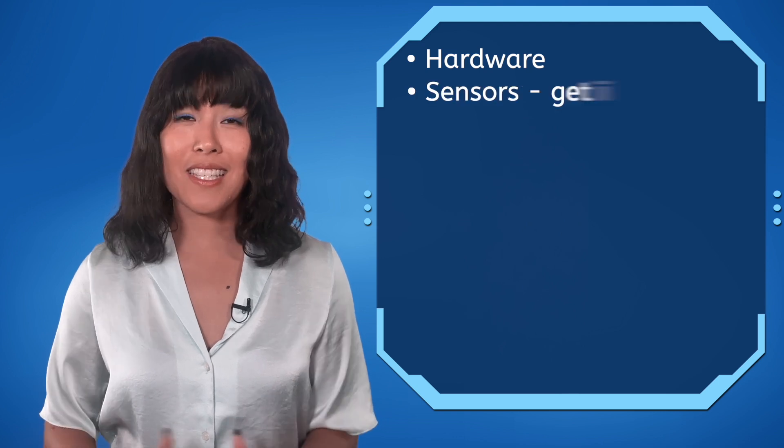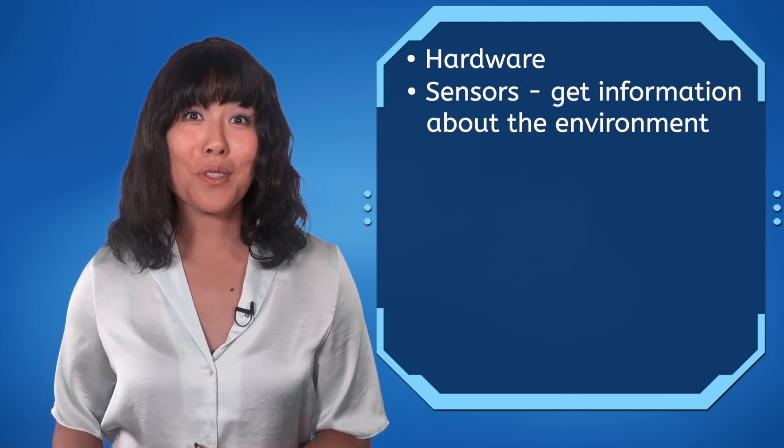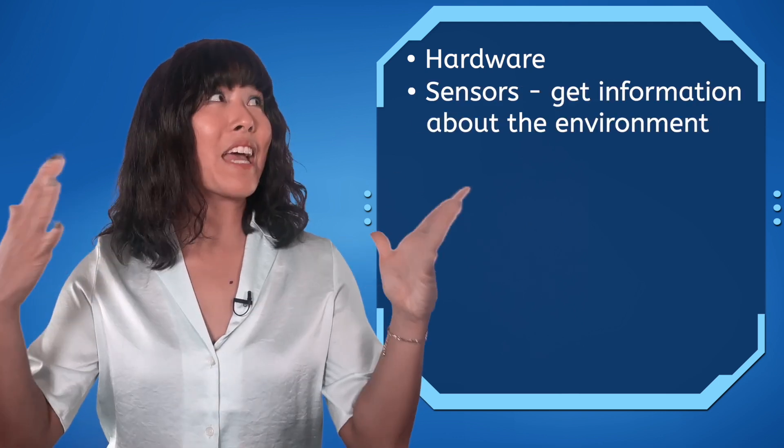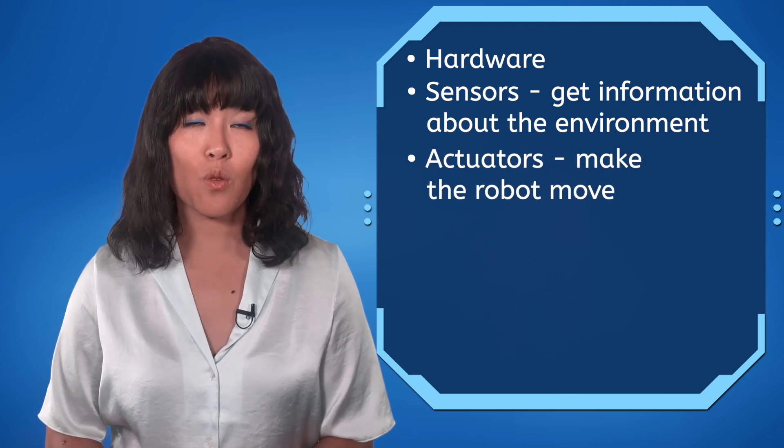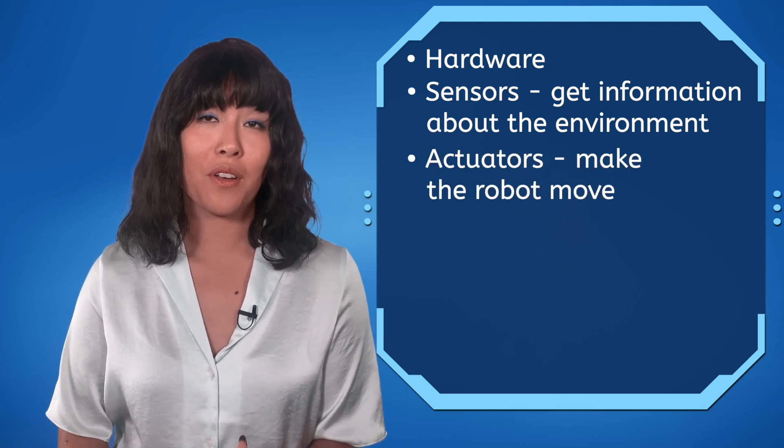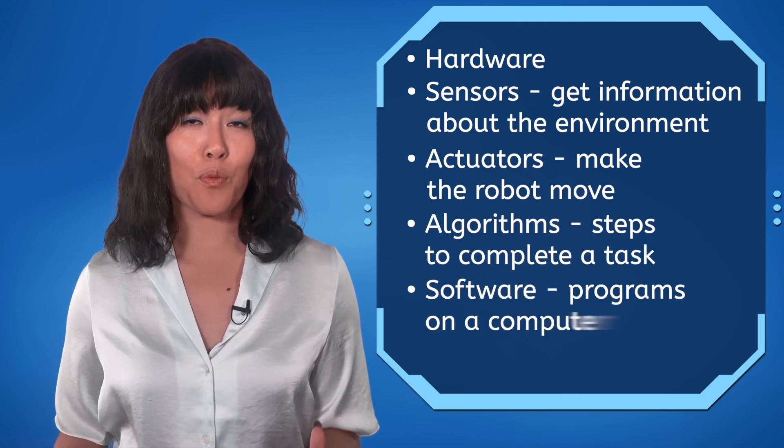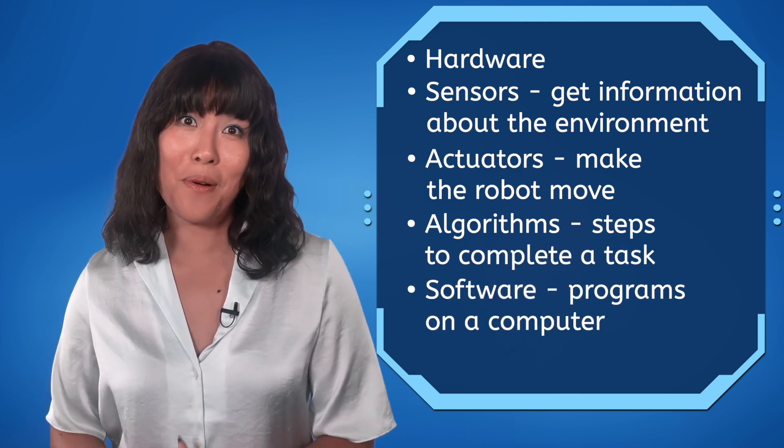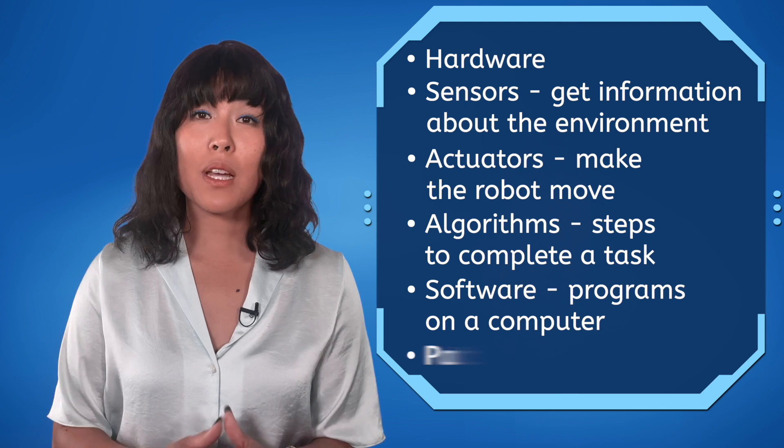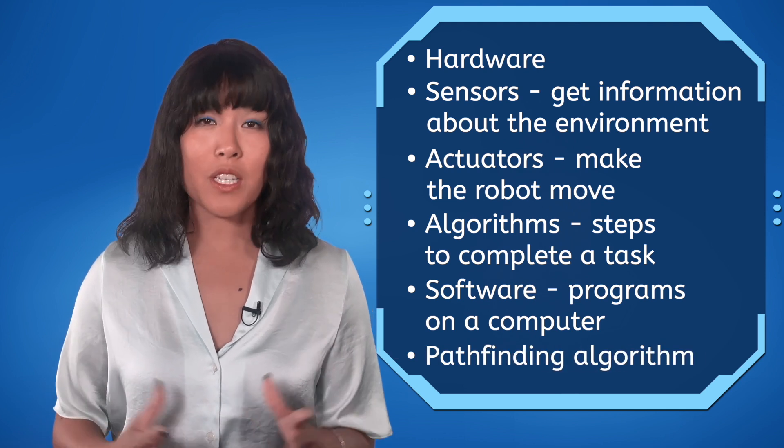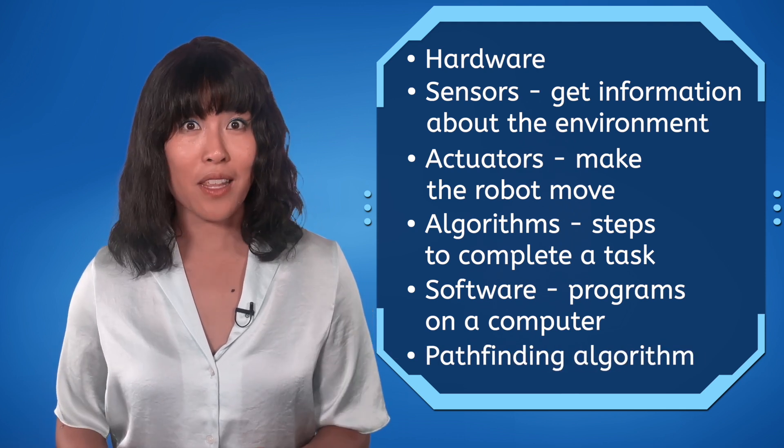First, we made sure to have the correct hardware, the physical parts of the robot. This included sensors, tools that get information about the environment. We also used actuators or devices to make the robot move. Lastly, we write the algorithm, which is part of the software programs that guide the robot. In particular, we used a pathfinding algorithm, which helps the robot find the shortest path between two points.